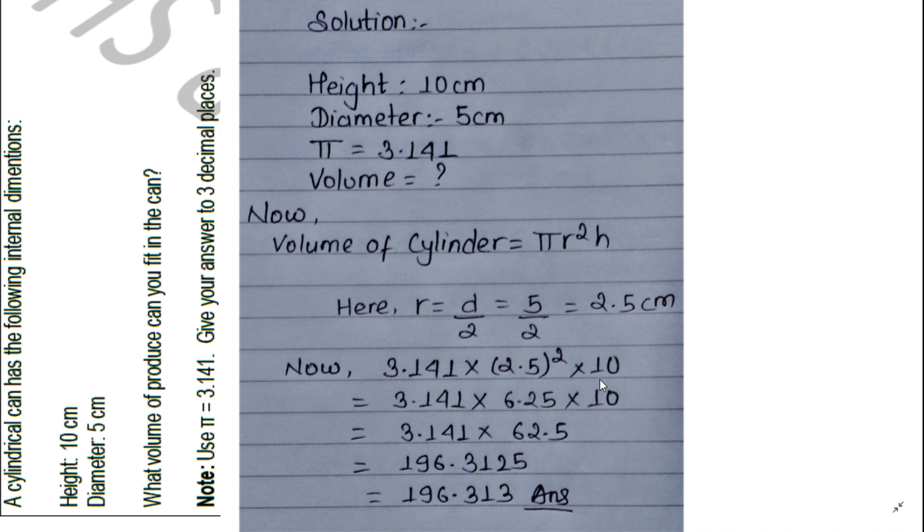Now 3.141 times 2.5 squared times 10 equals 3.141 times 6.25 times 10. 3.141 times 6.25 equals 196.3125. Rounding to three decimal places, since 5 rounds up, the answer is 196.313. That's your answer to three decimal places.